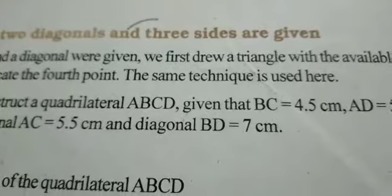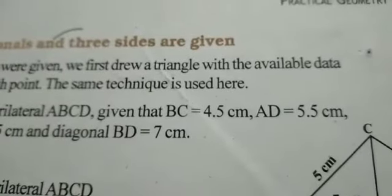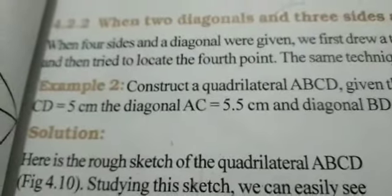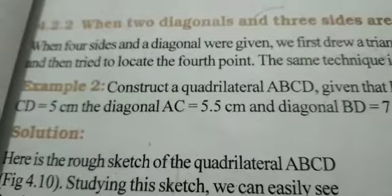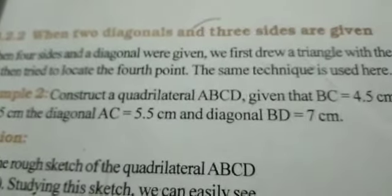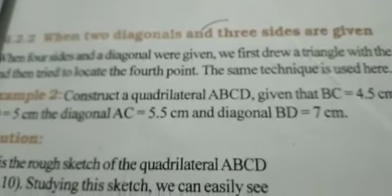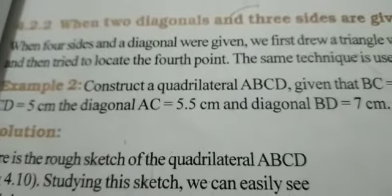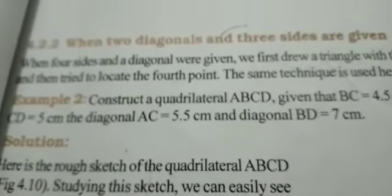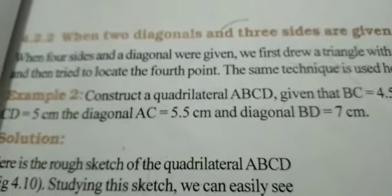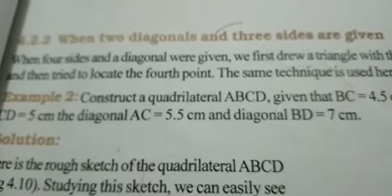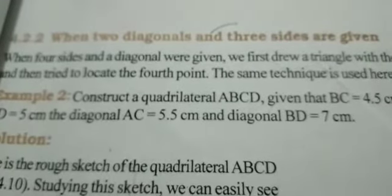Construct quadrilateral ABCD given that BC = 4.5 cm, AD = 5.5 cm, CD = 5 cm, diagonal AC = 5.5 cm, and diagonal BD = 7 cm. From the question you can make out that two diagonals' measurements are given to you and three sides are also given.